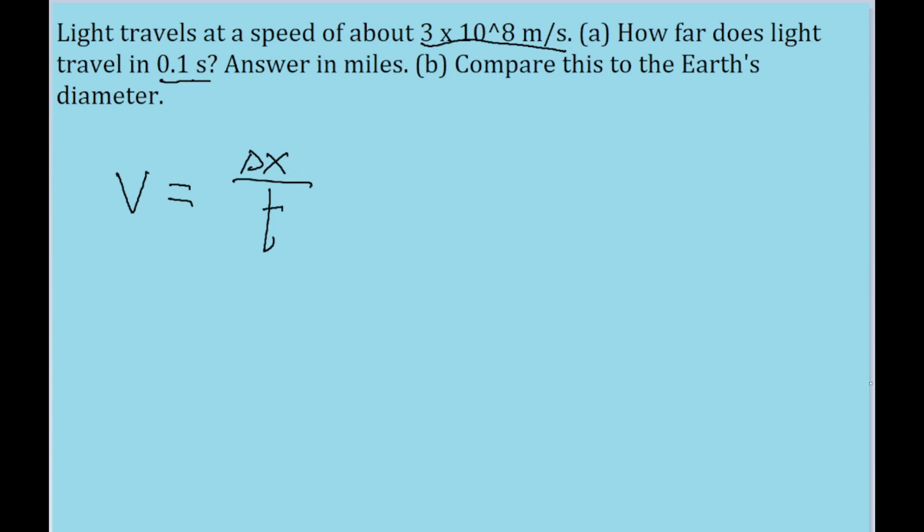In the case of this problem, we're given a time interval, and we're given a speed. So the only thing we're missing, the thing we're trying to find, is this delta x here.